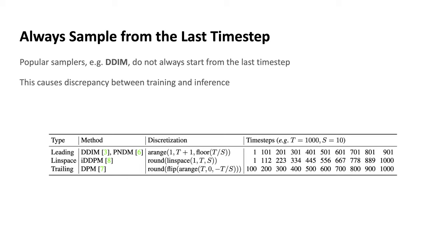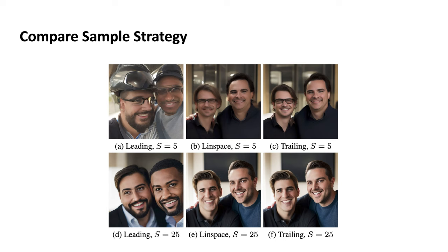We compare two other types of discretization: linspace and trailing. Linspace always includes the first and last time step of the model and then linearly spaces out the intermediary steps, whereas trailing always includes the last time step but may not include the first. We found that especially for a lower number of sampling steps, trailing just makes more sense. When the sampling step is 5, trailing clearly outperforms linspace, because with linspace it doesn't make sense to infer at t equal to 1 — it involves very little noise and the model cannot perform efficient fixes. Trailing is a more universal simple replacement for leading.